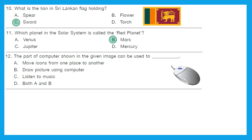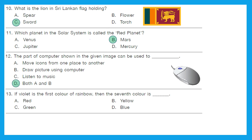Question 12: The part of the computer shown in the image can be used to — it is a mouse. A: move icons from one place to another — yes. B: draw pictures using the computer — yes. C: listen to music — no. D: both A and B — that is the right answer, option D. Question 13: If violet is the first color of the rainbow, then the seventh color is ___?